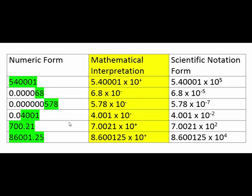In the last two examples, the exponential needs to be positive because we're inflating the coefficients back to reproduce the original numeric form. In this case, 700.21 equals 7.0021 times 10 squared, or 100. And the last one: 8.600125 times 10 to the 4 — a positive exponential — produces 86,001.25.